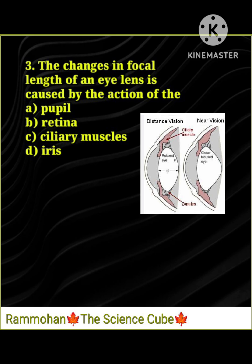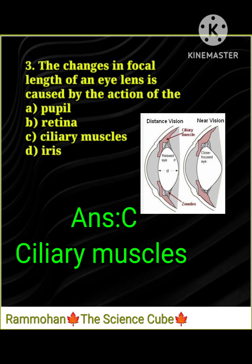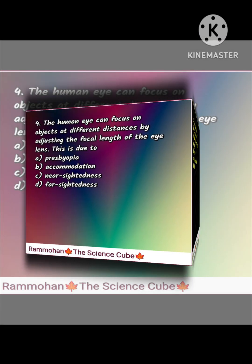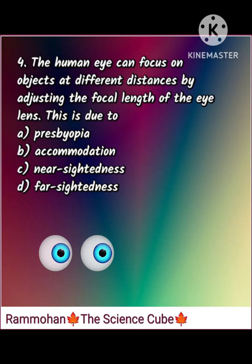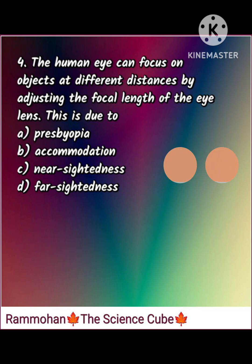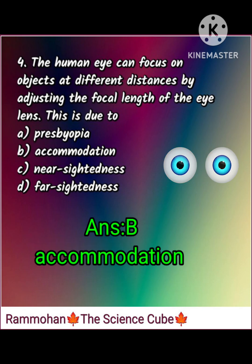Third question: the changes in focal length of an eye lens is caused by the action of the ciliary muscles. Fourth question: the human eye can focus on objects at different distances by adjusting the focal length of the eye lens — this is due to accommodation.